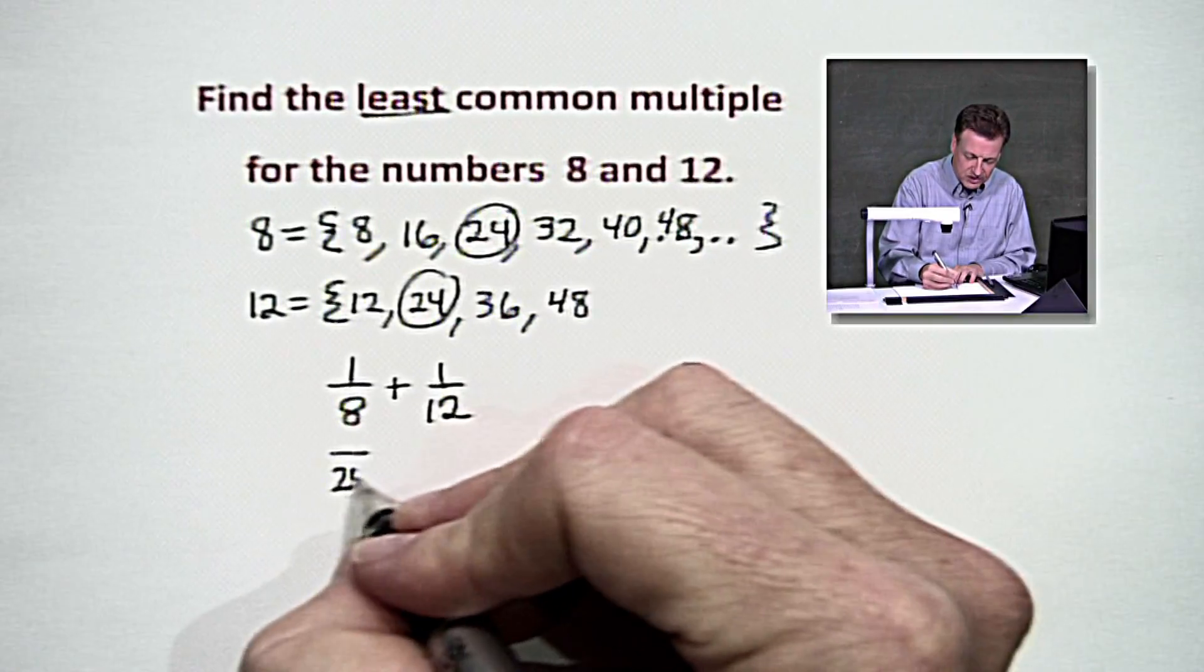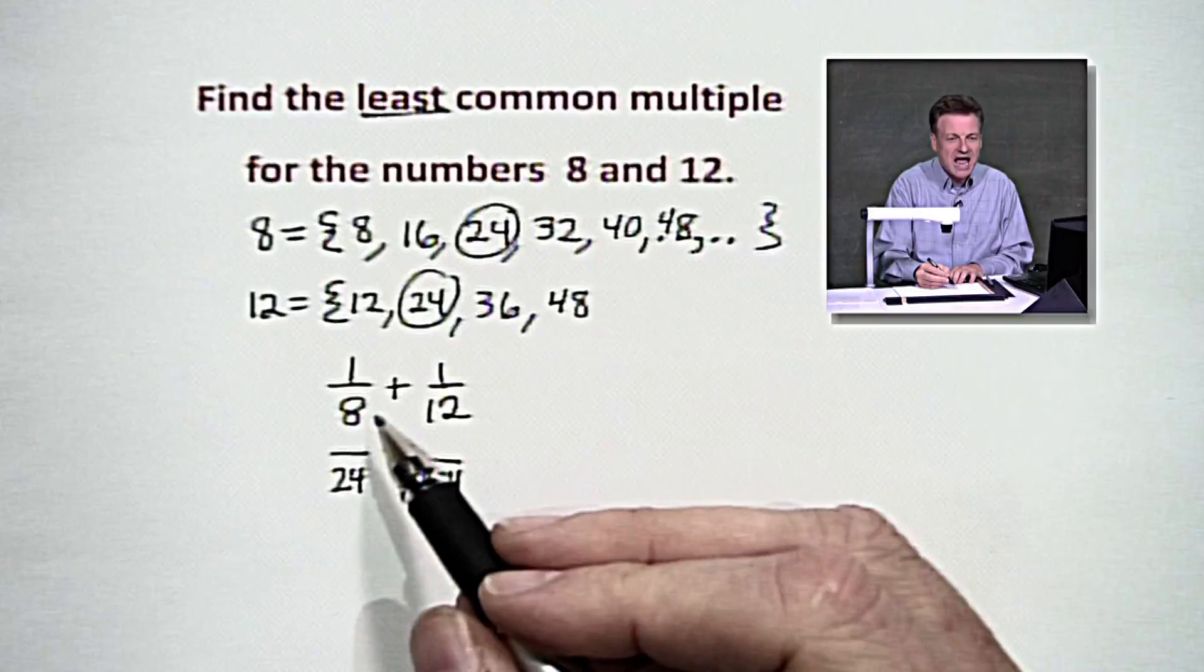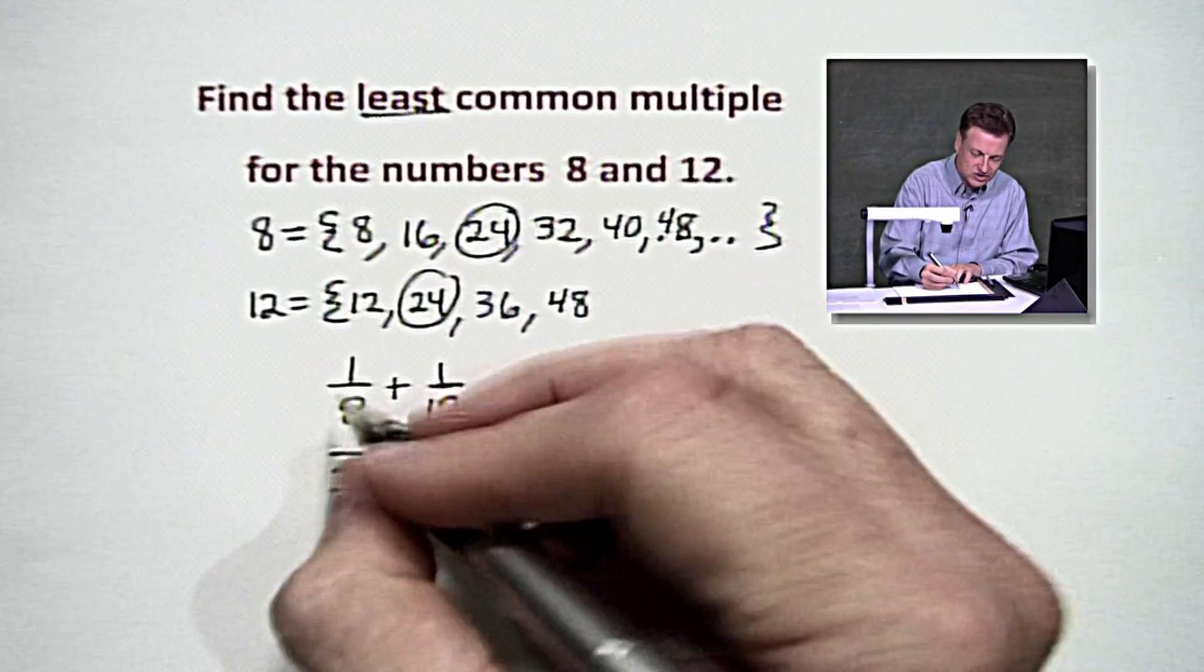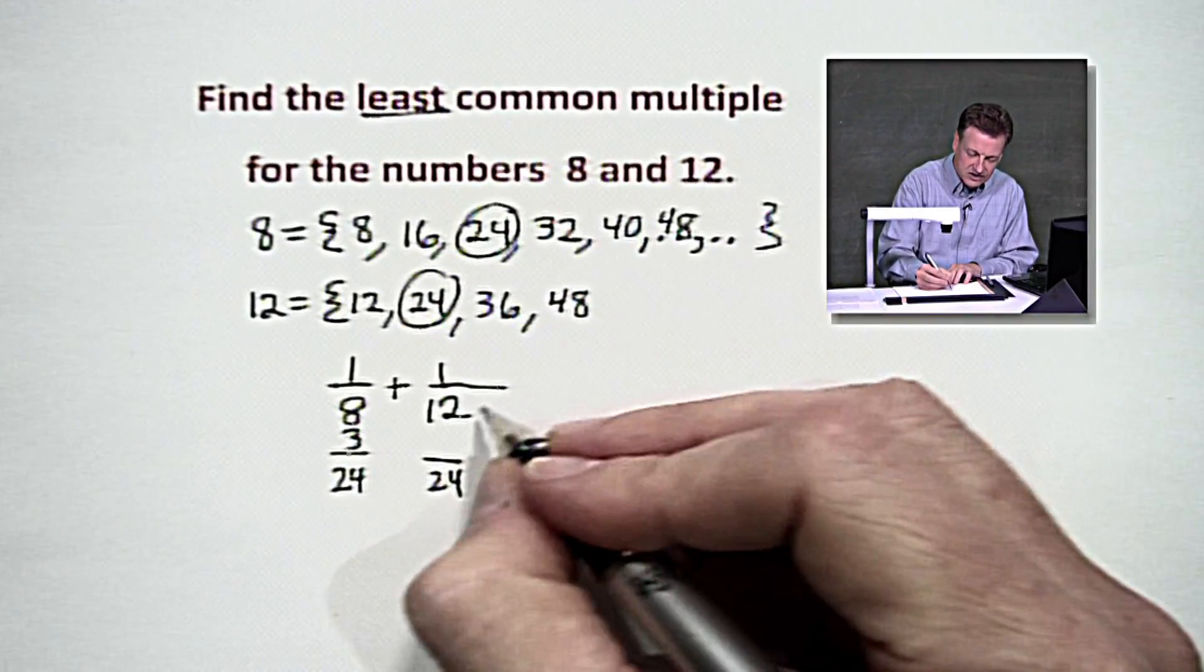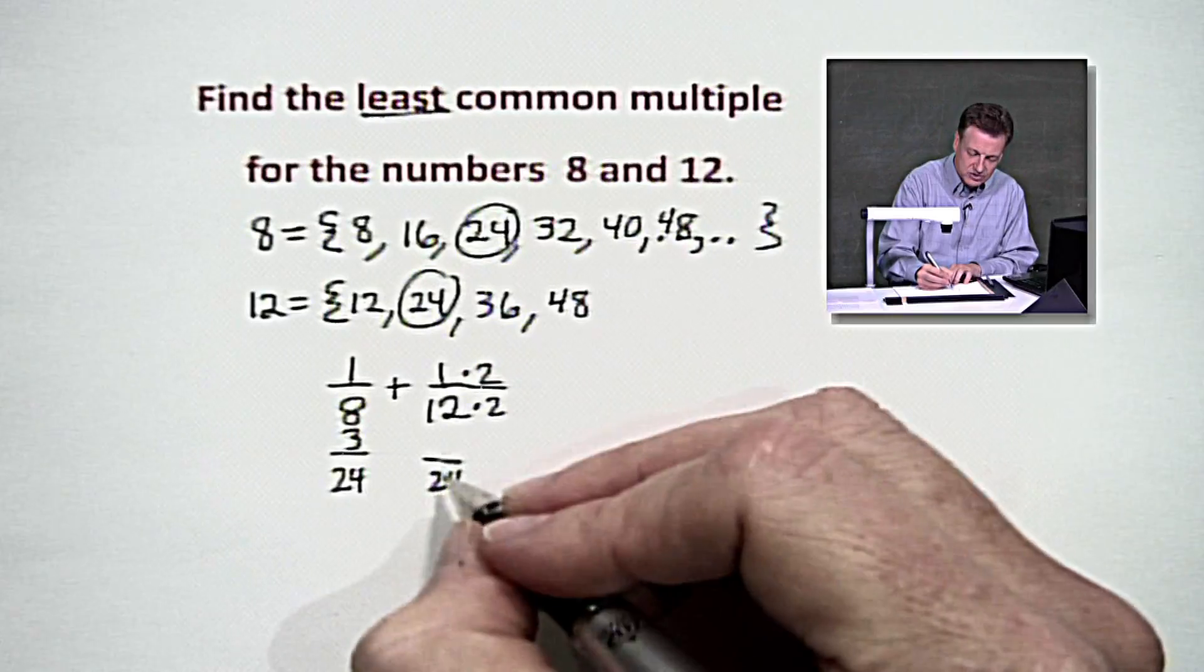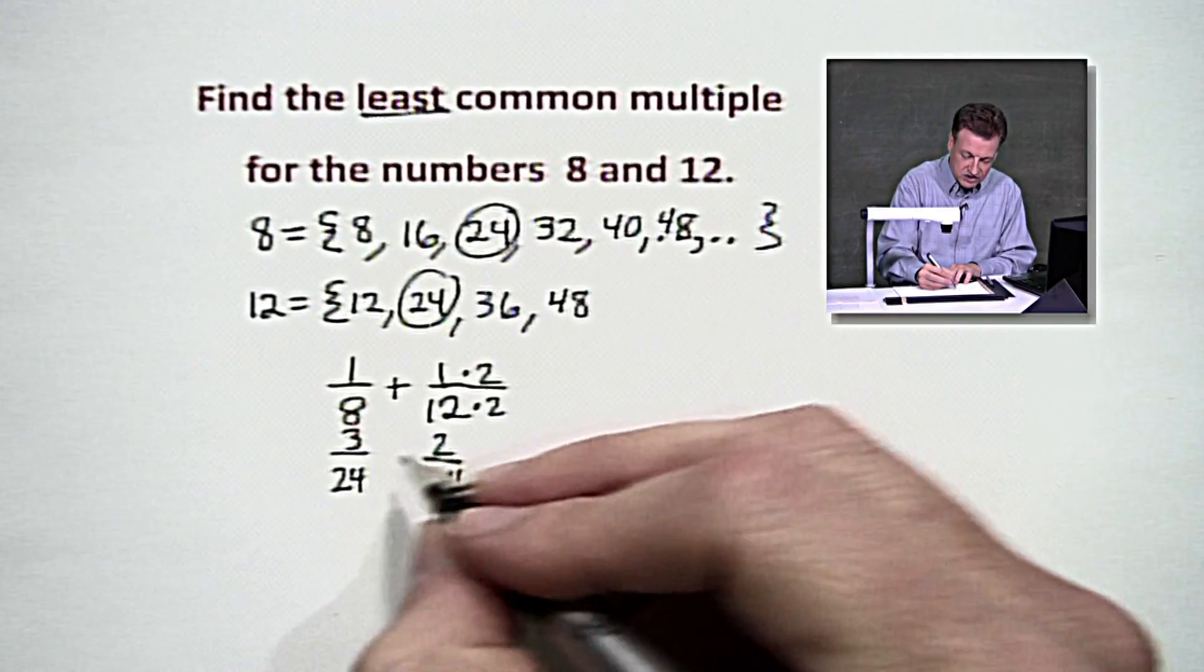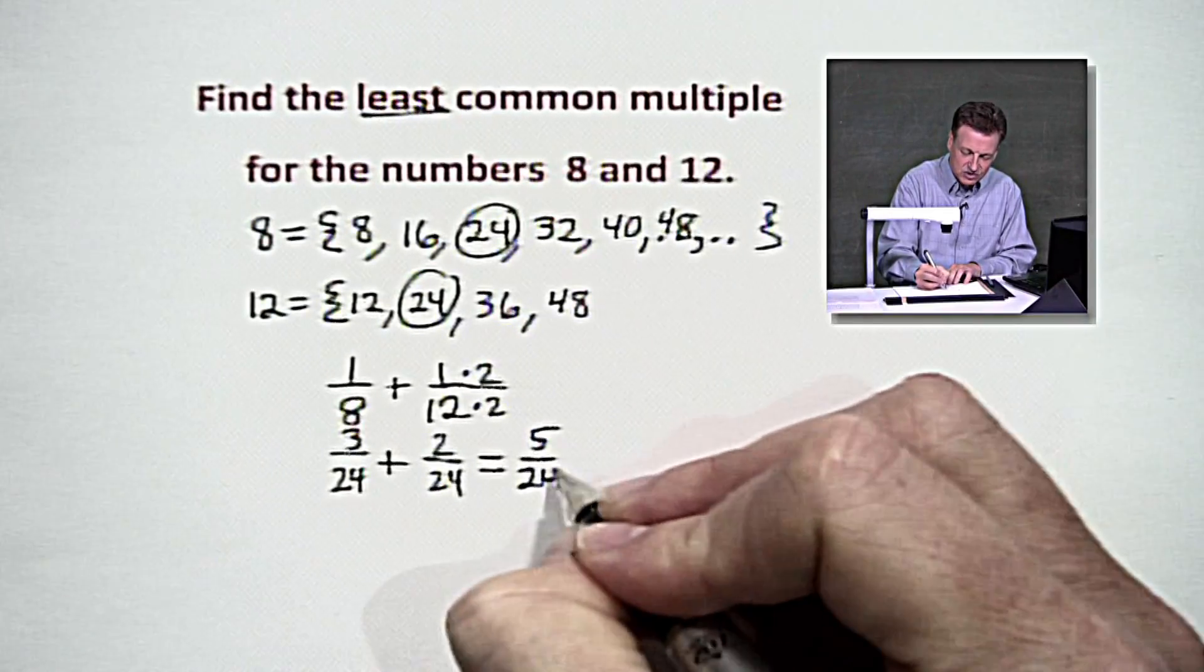We'll put a 24 here and a 24 here. Look at it, and you'll see what happens. 8 goes into 24 three times. 3 times 1 will give us that 3. And over here, we're going to look at 2. And 2 times 12 gives us 24. We've got to multiply the numerator by 2. We have 2. It says plus, so we will add. And that, my friends, would give us 5/24.